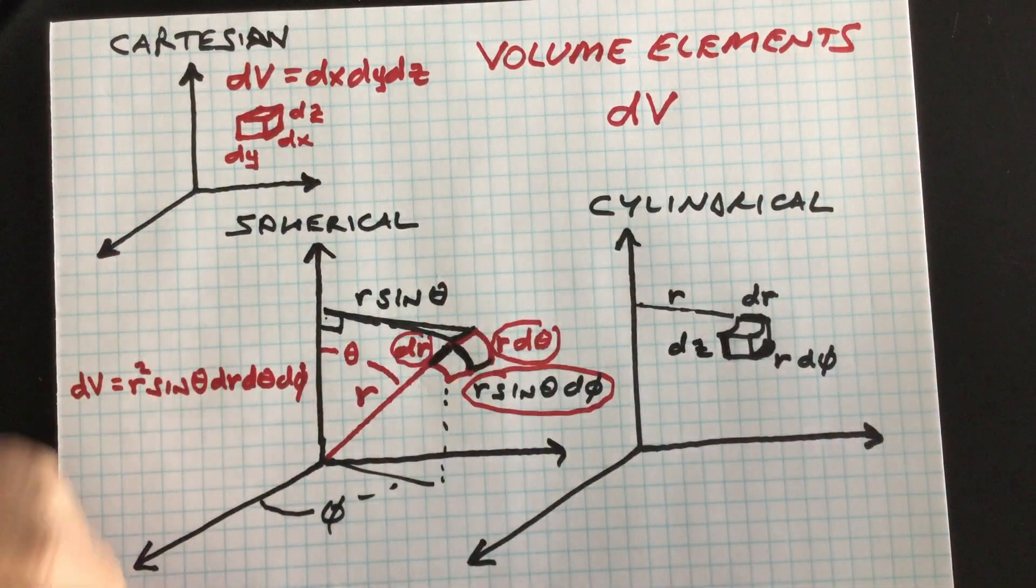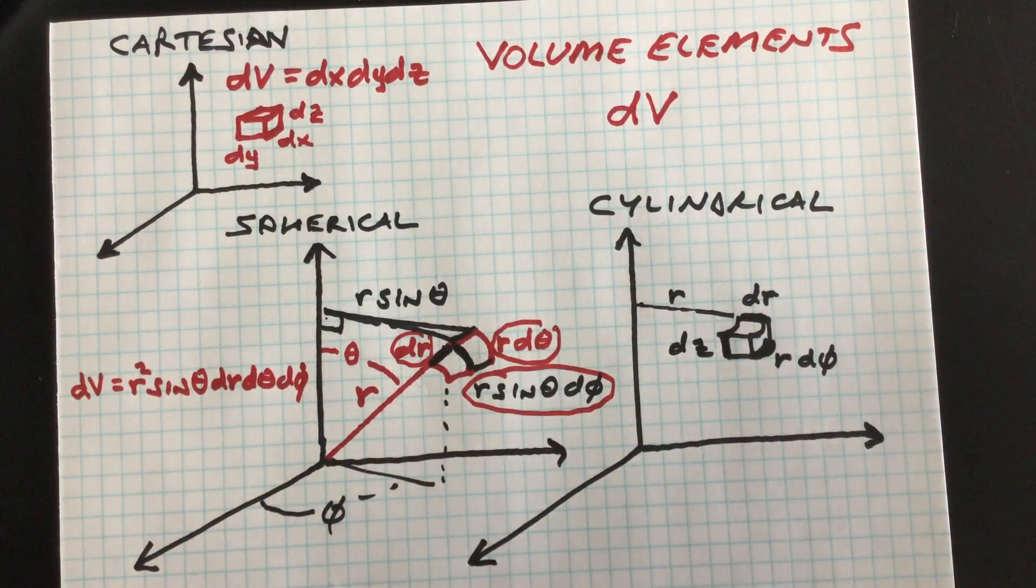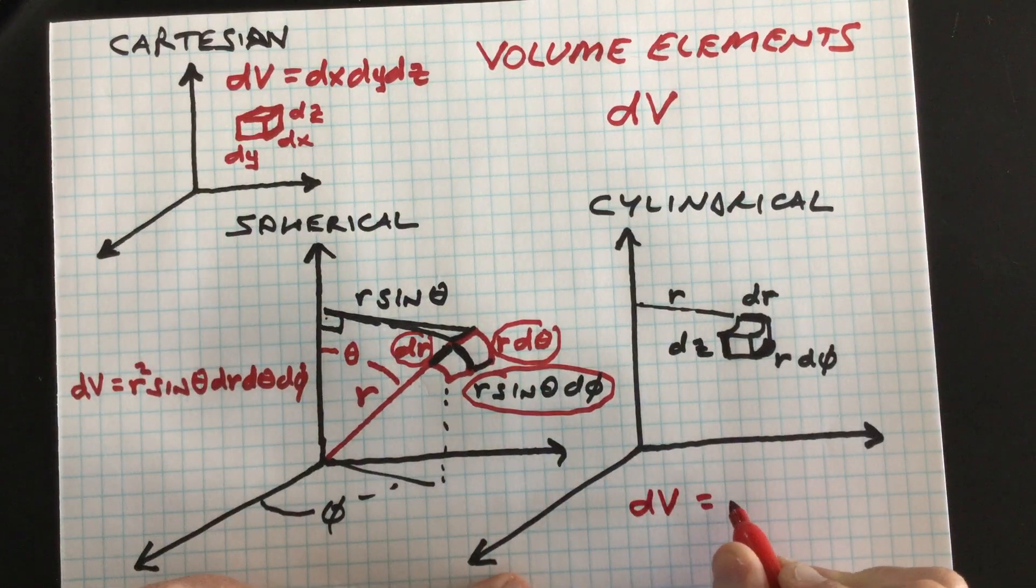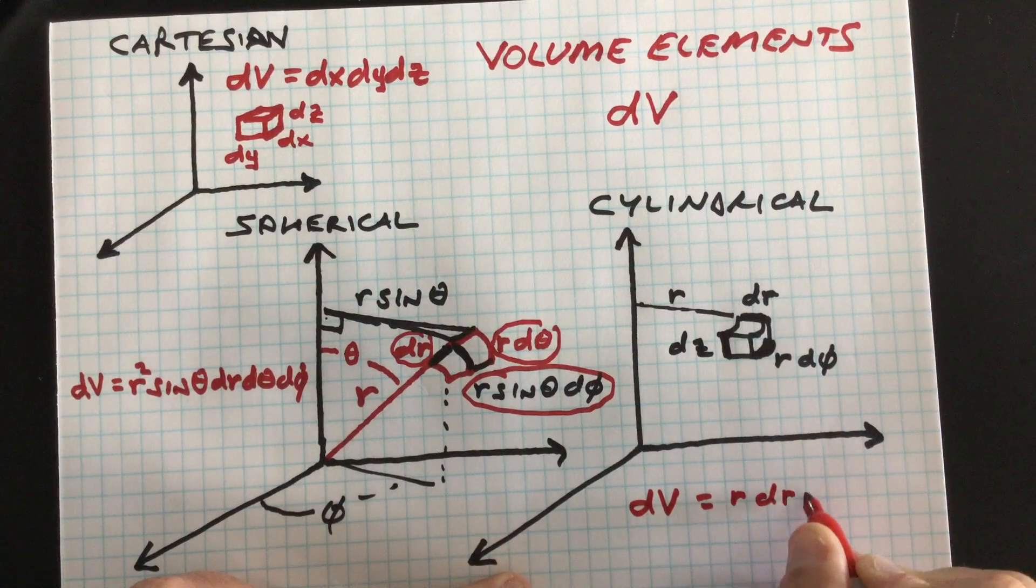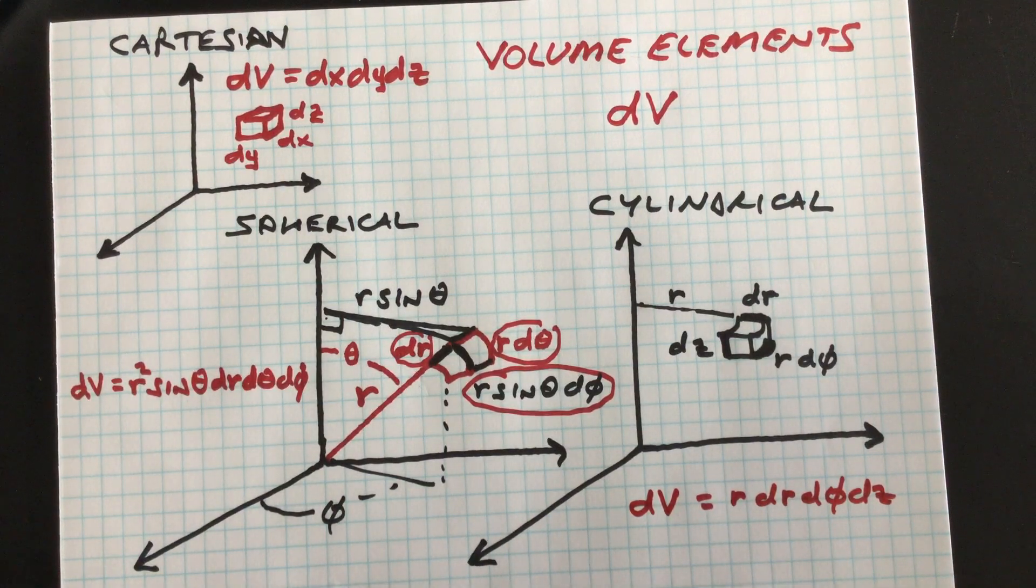And so it's just the product of those three things to get the volume of that little chunk. And so in cylindrical coordinates, your primitive volume element is going to be r dr d phi dz. Very often people will also use theta instead of phi for this. So those are your three primitive volume elements in Cartesian, spherical, and cylindrical coordinates.